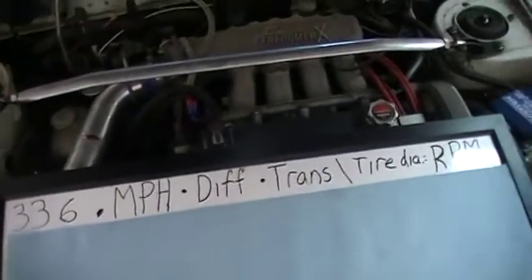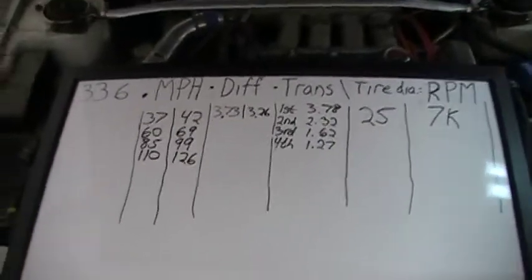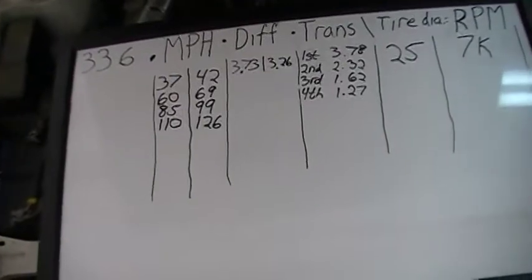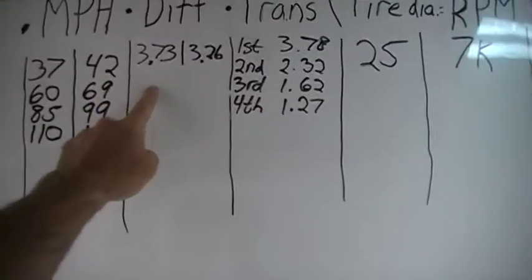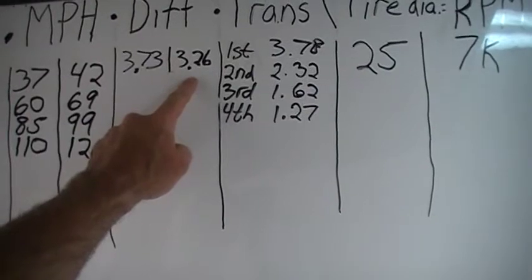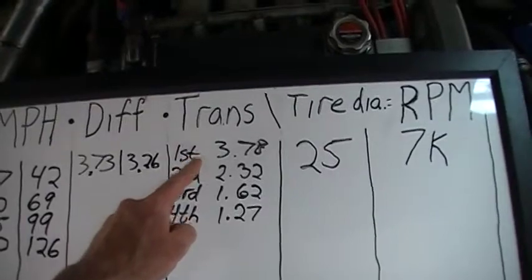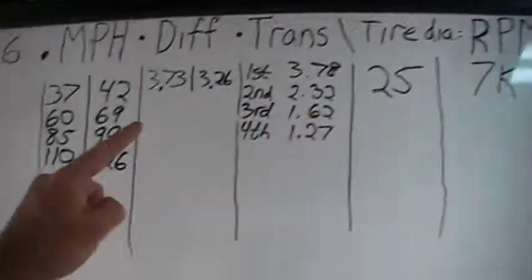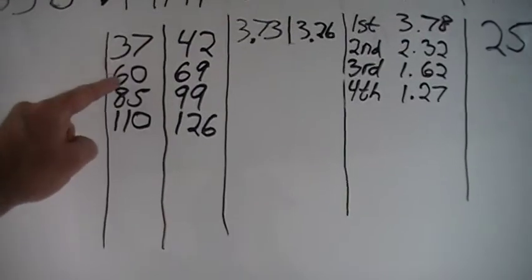I crunched the numbers on my IS300. I was trying to find the footage because I ran it in the quarter and those gears are so short. As we all know, the CD009 gears are very short. I currently have a 3.73 diff ratio. So this is current, and then this is what I want to go to — I want to go to a 3.26 diff ratio. So these are the gear ratios, and given a 7,000 RPM redline, these are the top speeds I'd be hitting at 7K RPM in first, second, third, and fourth gear.